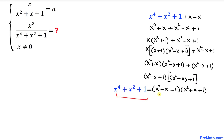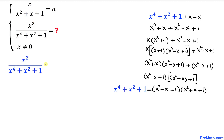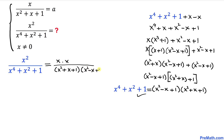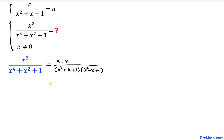Now let's focus on the left-hand side expression, x²/(x⁴ + x² + 1). The numerator x² can be written as x · x, and the denominator we replace with the two factors: (x² + x + 1)(x² - x + 1). We can then split this into two fractions: x/(x² + x + 1) times x/(x² - x + 1).